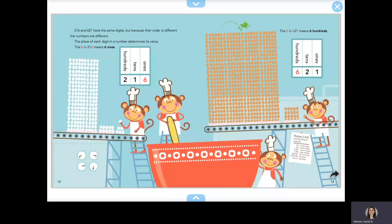216 and 621 have the same digits, but because their order is different, the numbers are different. The place of each digit in a number determines its value. The 6 in 216 means six ones. The 6 in 621 means six hundreds.